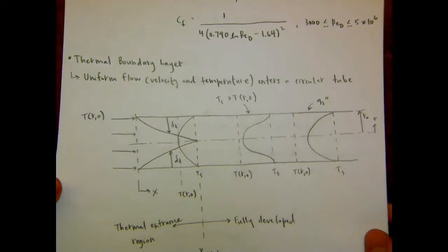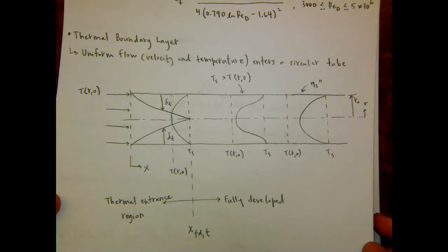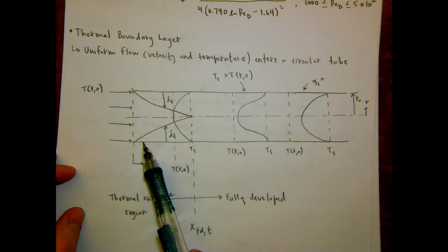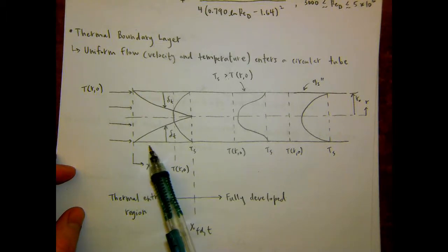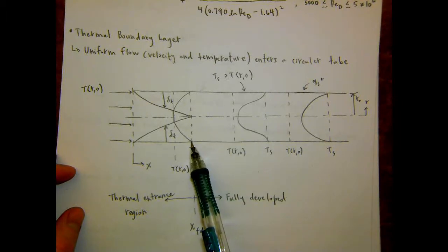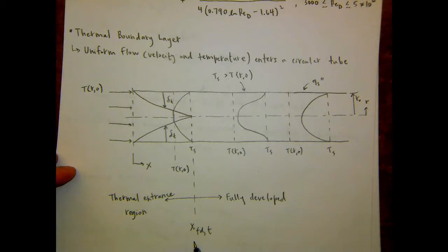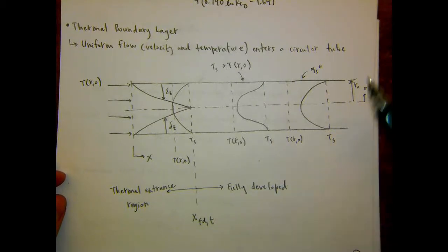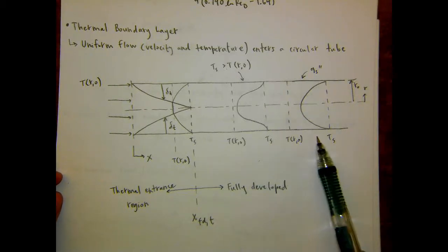Let's start talking about internal flow again. So we were talking on Friday about the thermal boundary layer development. We talked about velocity boundary layer development and then moved on to thermal boundary layer development. We said that assuming we have a uniform flow entering a circular tube, it has some temperature, and the thermal boundary layer will begin to develop right at the entrance of the tube, and it'll continue developing downstream. There's a point where the boundary layers merge, which is the thermally fully developed length. So upstream of that position is the entrance region; downstream, the flow is thermally fully developed. And then depending on the boundary condition — constant surface temperature or constant surface heat flux — the shape of the profile is going to change.